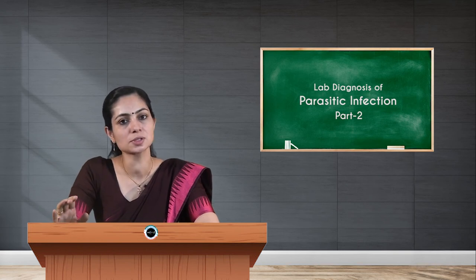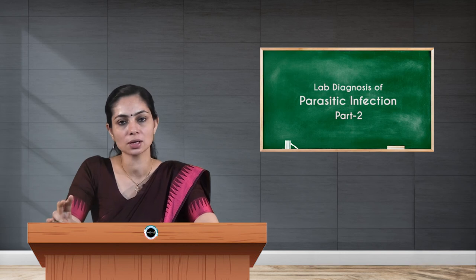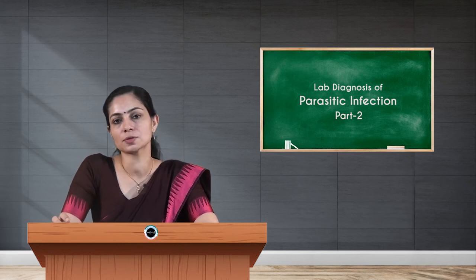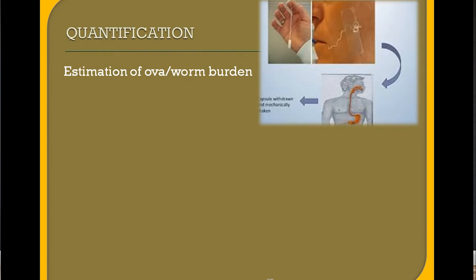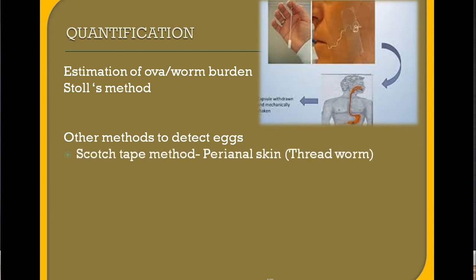If stool samples are negative, concentration techniques — either sedimentation or flotation — can confirm parasitic infection. Sometimes we estimate the number of parasitic structures in the stool sample to know the worm burden, using methods like Stoll's method. Other techniques include the scotch tape method, which collects perianal skin samples and is used for threadworm or pinworm. For Giardia, the enterotest is used to find trophozoites.